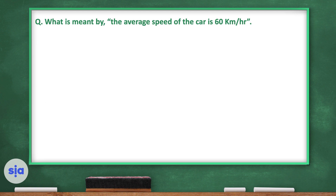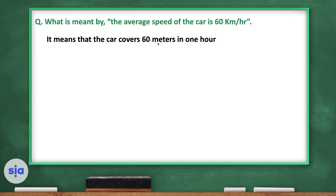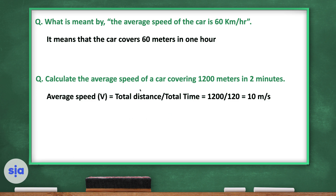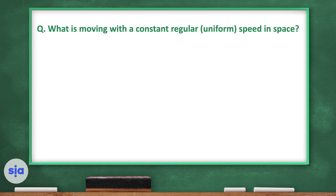Average speed equals total distance divided by total time. For example, what is meant by the average speed of a car being 60 km/h? It means the car covers a total of 60 kilometers in one hour. Another example: calculate the average speed of a car covering 1,200 meters in two minutes — that's 1,200 ÷ 120 seconds = 10 meters per second.